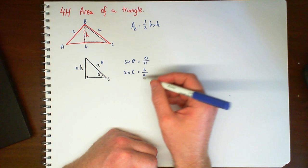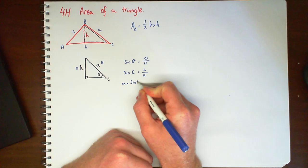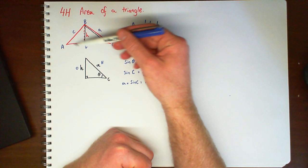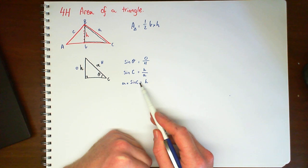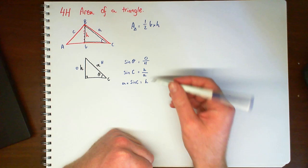and then if I just multiply by A, I'll have A times sine C equals the height. So for any non-right angle triangle, I can describe the height as whatever side A is, times sine of that angle in the corner here, for C.